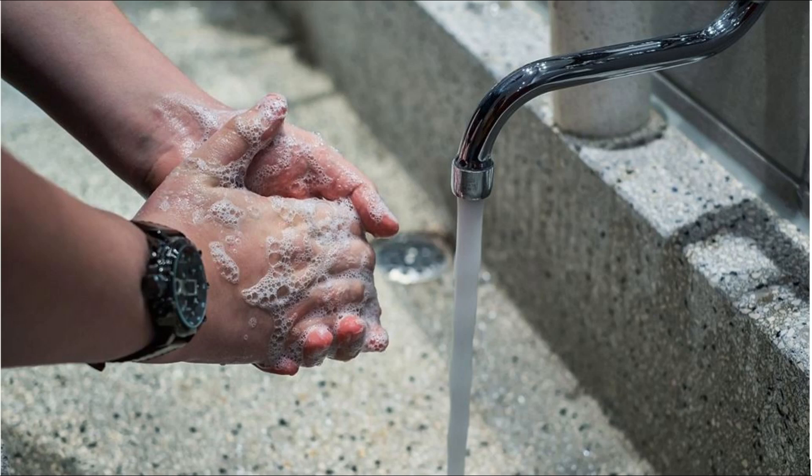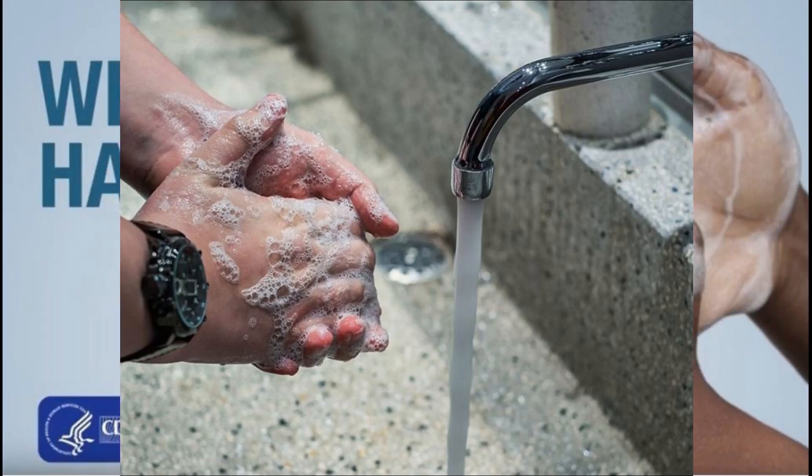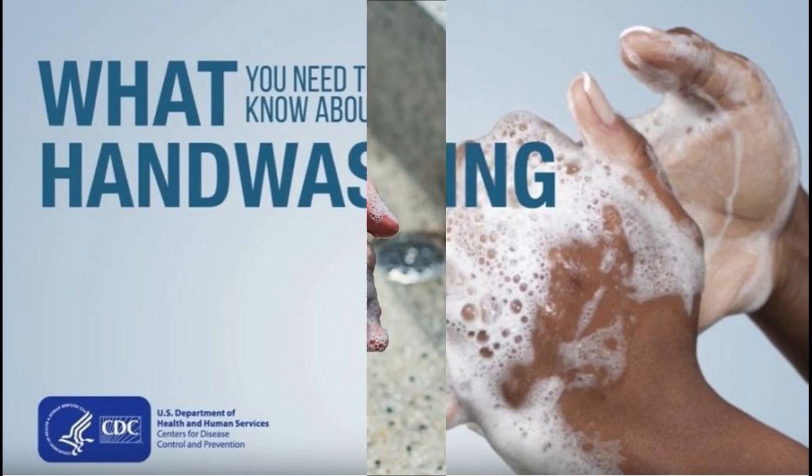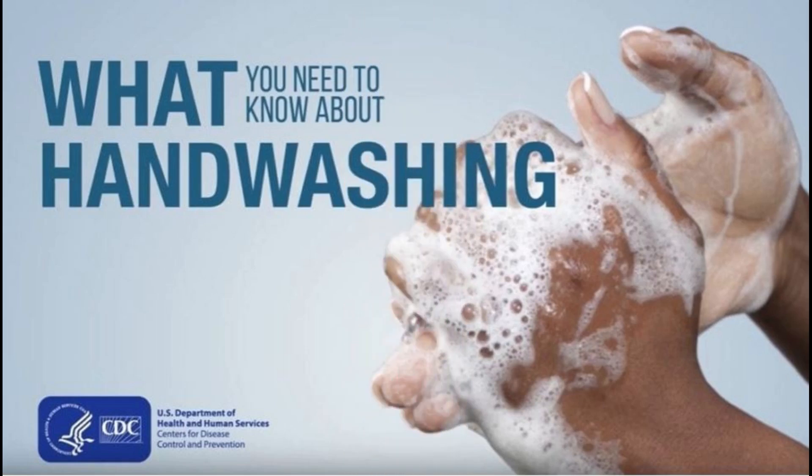The United States Centers for Disease Control and Prevention (CDC) recommends the following steps when washing one's hands. Step 1: Wet hands with warm or cold running water. Running water is recommended because standing basins may be contaminated. While the temperature of the water does not seem to make a difference, some experts suggest warm, tepid water may be superior.